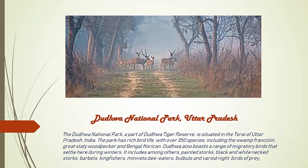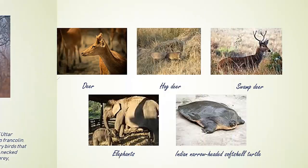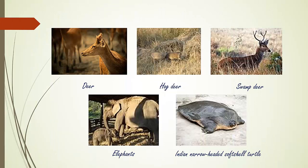Dudhwa National Park is situated in the Terai of Uttar Pradesh. This national park is rich in bird life and is also home to tigers. Examples of wildlife in Dudhwa National Park include Deer, Hog Deer, Swamp Deer, Elephants, and the Indian Narrow-headed Softshell Turtle.